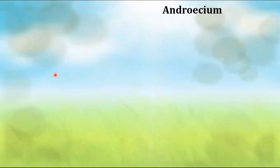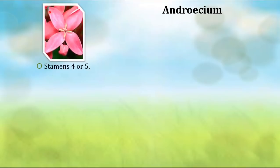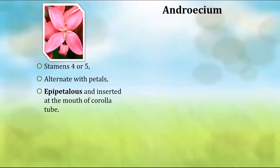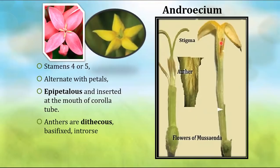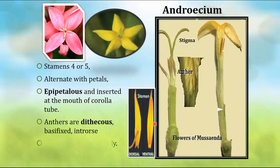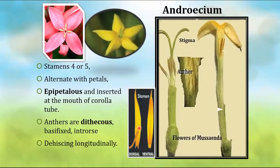The androecium consists of four or five stamens — the male reproductive unit. They are attached to the petals, called epipetalous condition, and also inserted at the mouth of the corolla tube. The anther is dithecal — two lobes present — basifixed, and introrse, meaning they turn inward. Dehiscence is longitudinal.